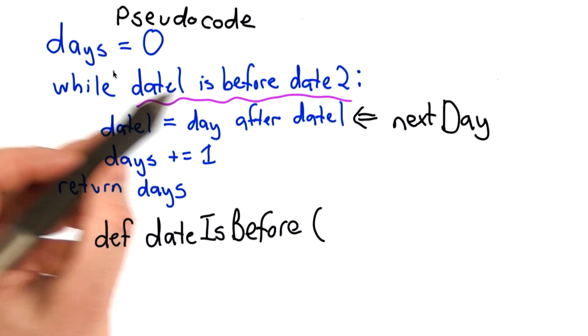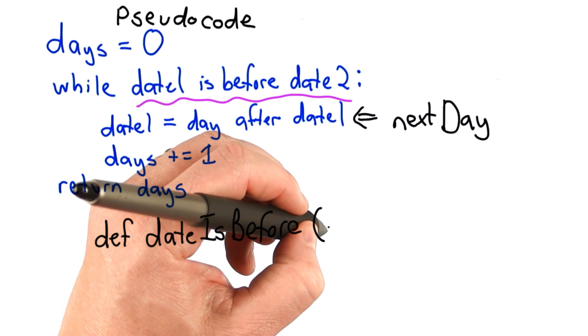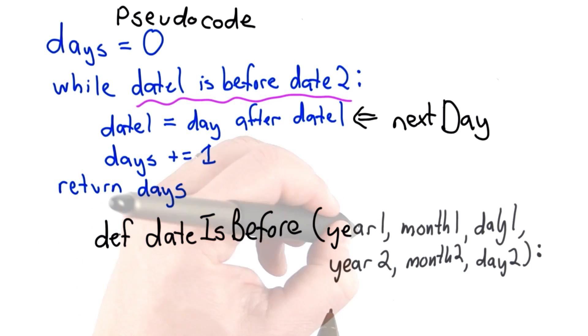So let's do that. We're going to write a procedure date is before that takes as inputs 2 dates, still encoded as 3 values. And it's going to return true or false telling us whether year 1, month 1, and day 1 is before year 2, month 2, and day 2.